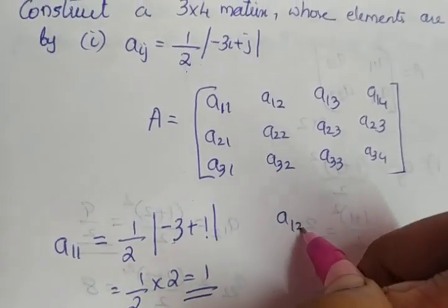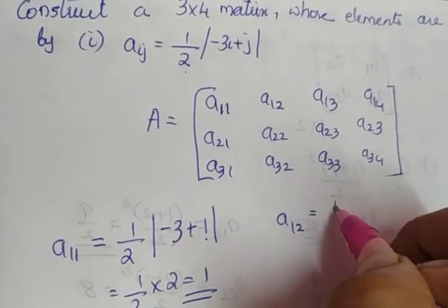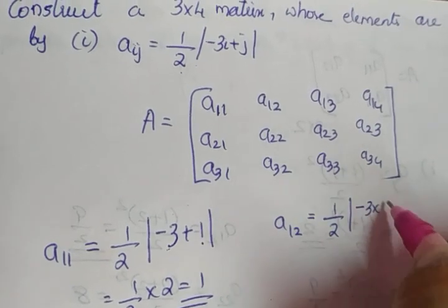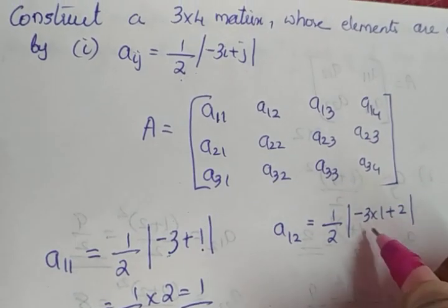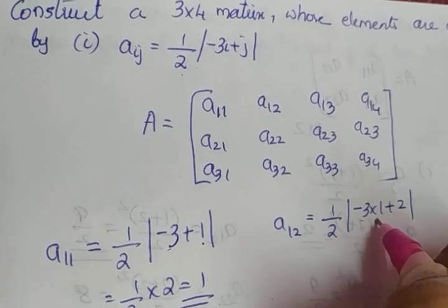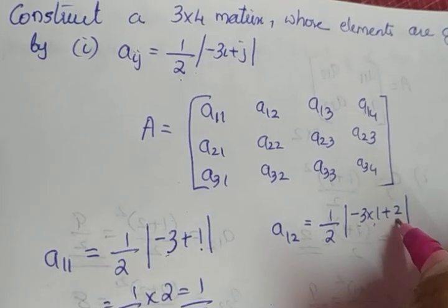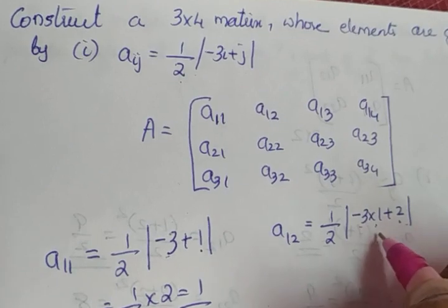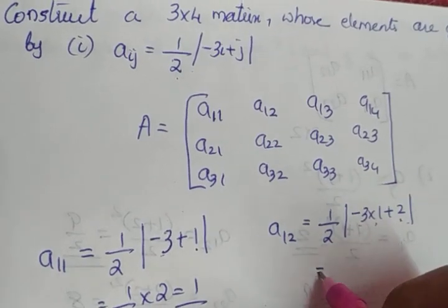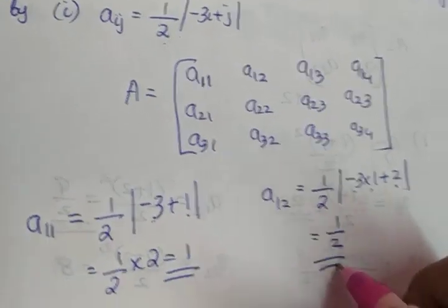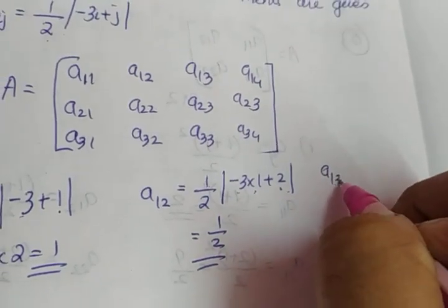Find A12. A12 is 1 by 2 into modulus of minus 3 into 1 plus 2. Minus 3 into 1 is minus 3; minus 3 plus 2 gives you minus 1. Modulus of minus 1 is 1. So the answer is 1 by 2 into 1, which gives you 1 by 2.